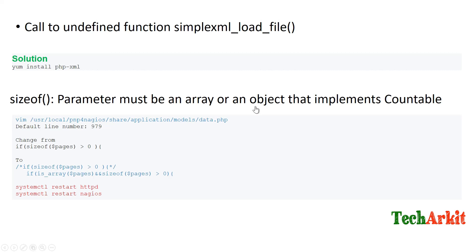If you get 'sizeof(): Parameter must be an array or an object that implements Countable', edit the PNP for Nagios data.php file. Go to line 979, find the sizeof($pages) check, comment out that line, and add a replacement line to check if $pages is an array, defaulting to an empty array. Then restart both the web service and the Nagios service — all issues should be resolved and the PNP for Nagios graphs should display correctly.